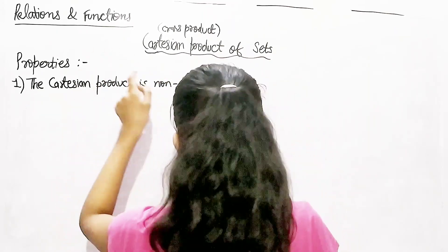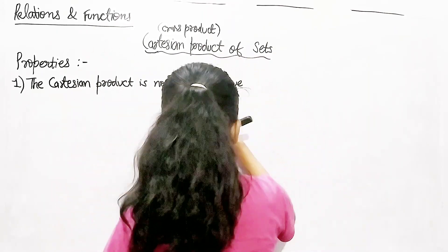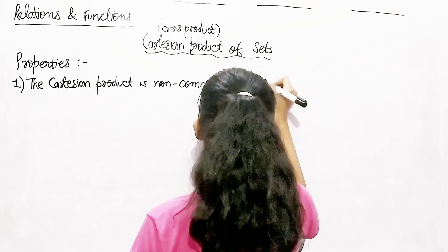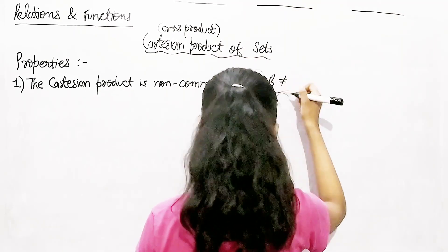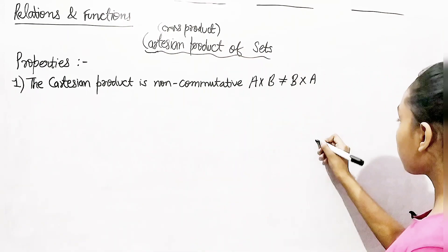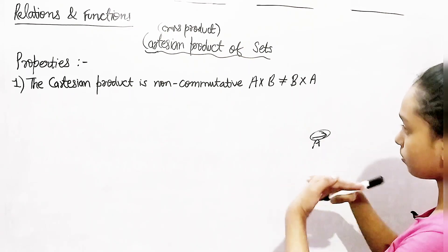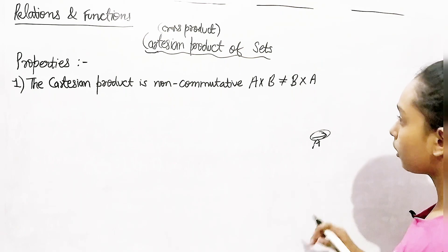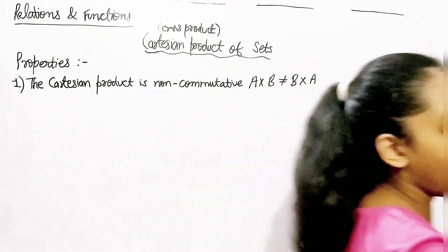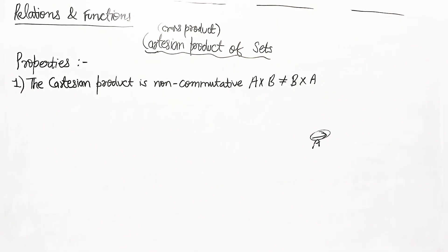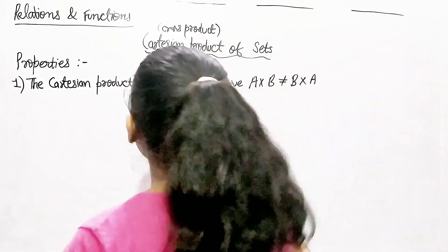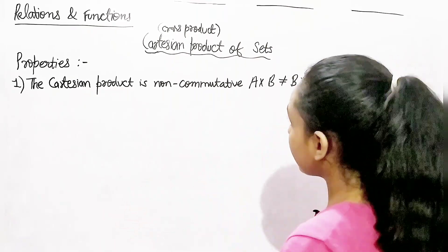The Cartesian product is non-commutative, which means it doesn't follow the commutative law. In other words, A cross B is not equal to B cross A. Remember, these are sets, not vectors — we're discussing mathematics, not physics.